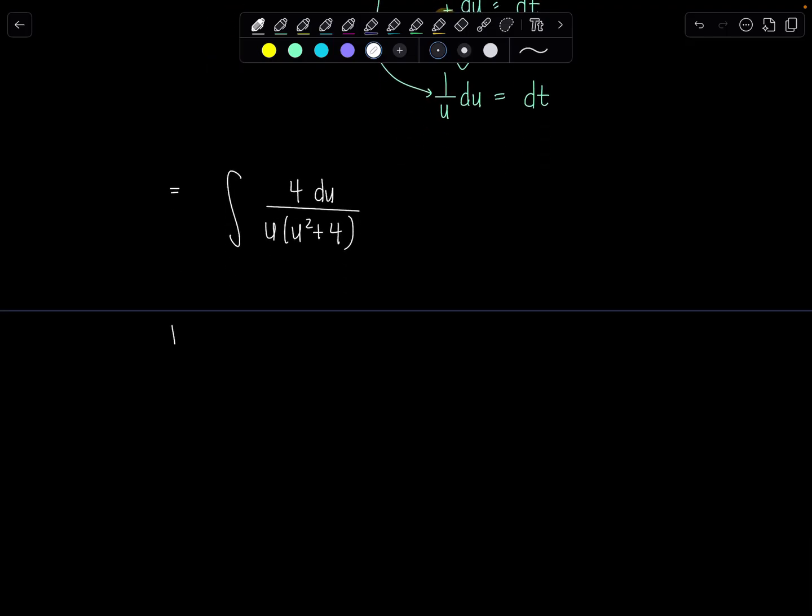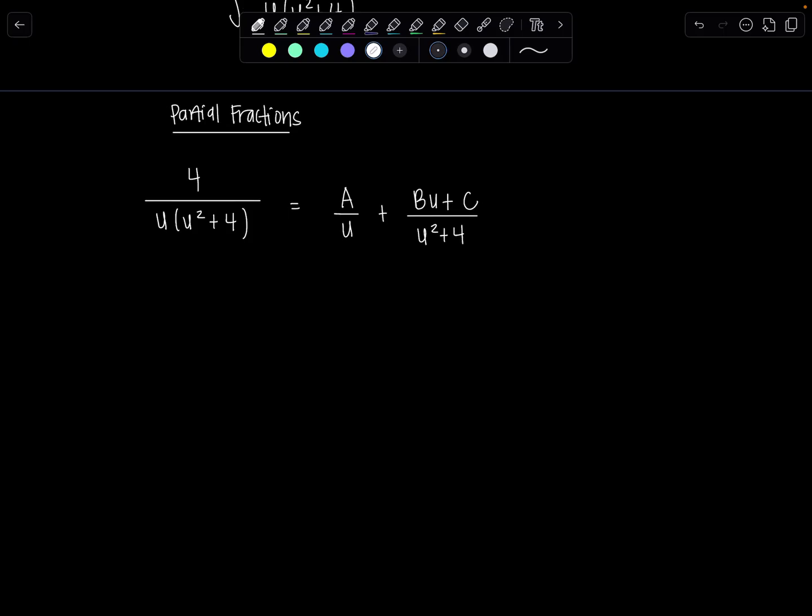So let's do so. Partial fraction time. So the denominator's already factored, that's nice. u squared plus 4, that's an irreducible quadratic. So let's make sure we set this up correctly. u is just a linear factor. It's not even repeated. So I'll have a over u plus, then u squared plus 4 goes in the next denominator. And this will need bu plus c, linear expression, in the numerator. Now multiplying everything through by u, u squared plus 4, we're going to get 4 equals a times u squared plus 4 plus bu plus c times u. So 4 equals au squared plus 4a plus bu squared plus cu when I multiply everything out.